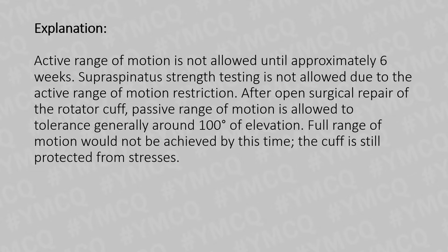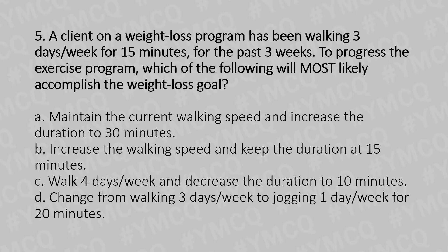Now let's move to our fifth question. A client of a weight loss program has been walking three days per week for 15 minutes for the past three weeks. To progress the exercise program, which of the following is most likely to accomplish the weight loss goal? Option A: Maintain the current walking speed and increase the duration to 30 minutes. Option B: Increase the walking speed and keep the duration at 15 minutes. Option C: Walk four days per week and decrease the duration to 10 minutes. Option D: Change from walking three days per week to jogging one day per week for 20 minutes.